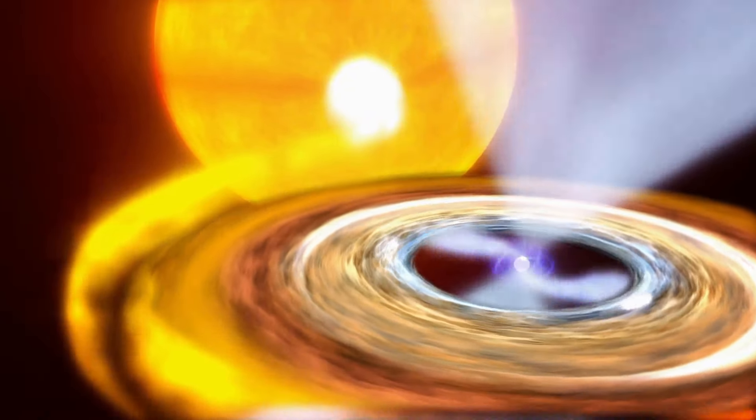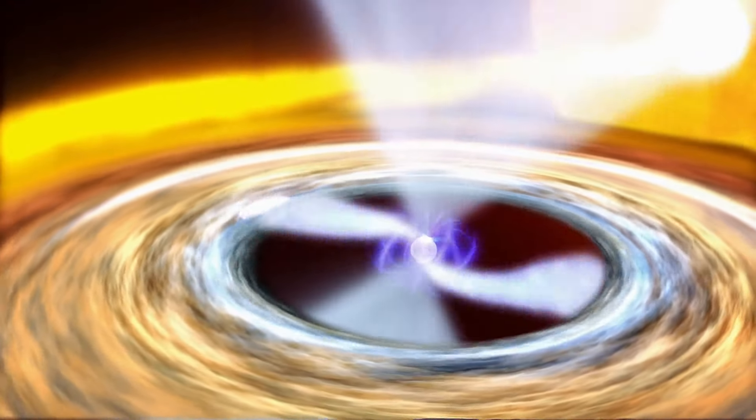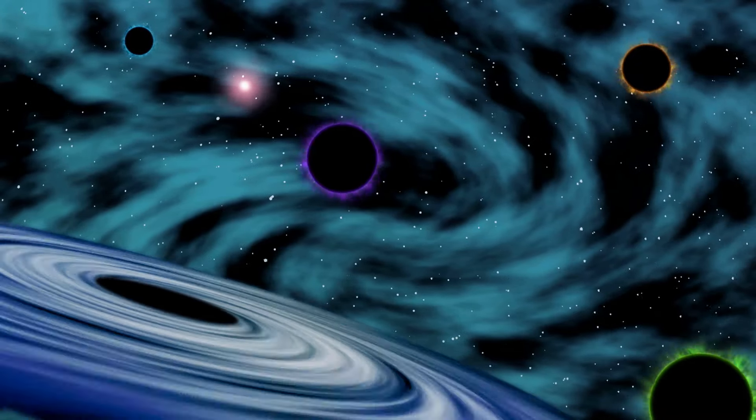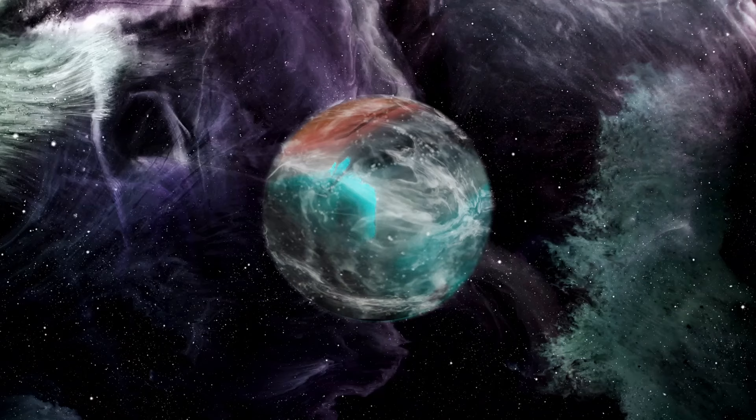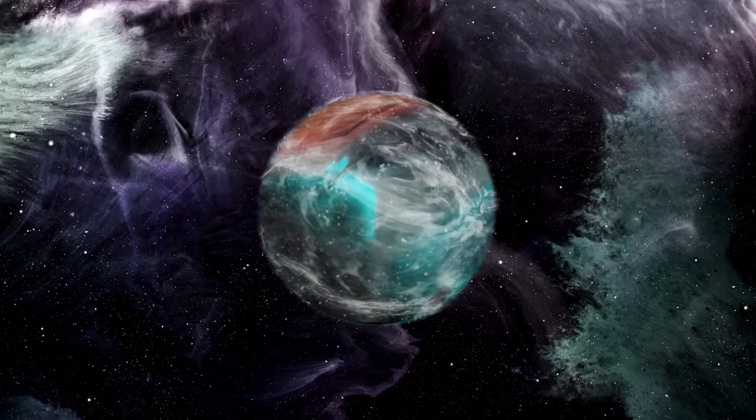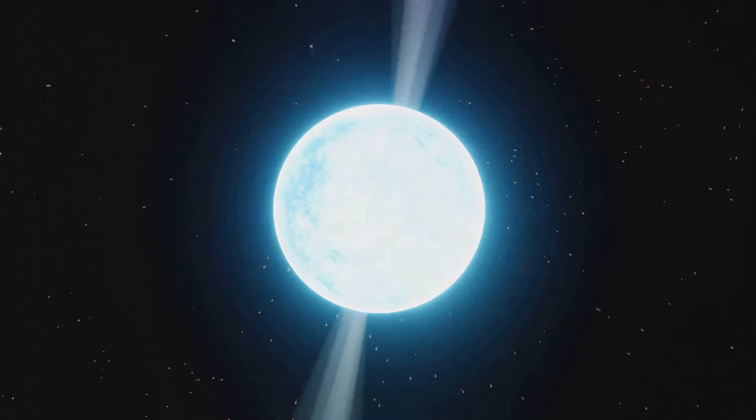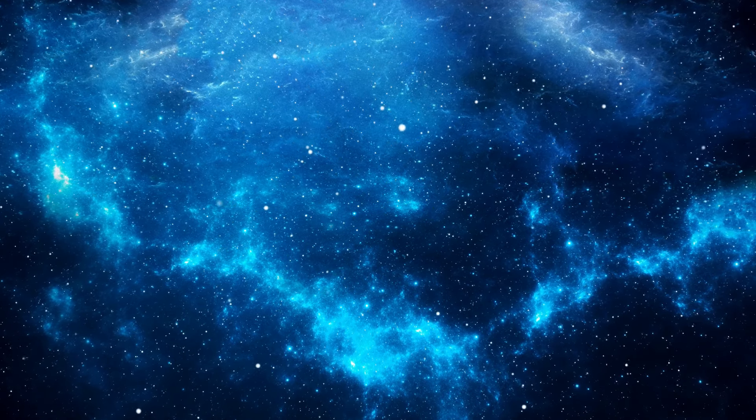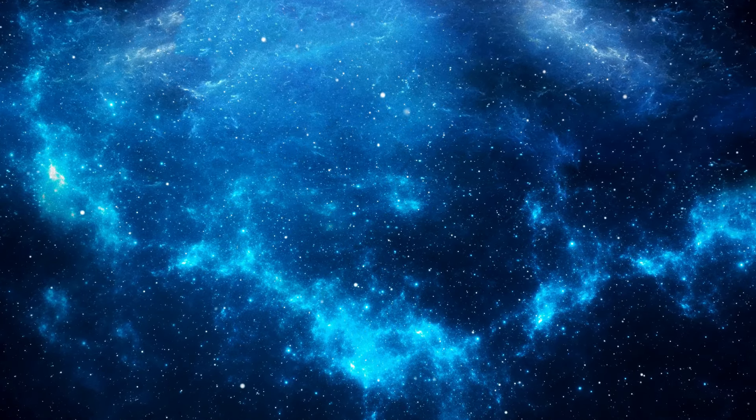These neutron stars are incredibly small for stellar objects, with diameters of about 20 kilometers or so. But don't let their size fool you. They are extraordinarily dense. Imagine a sugar cube worth of neutron star material. It would weigh as much as an entire mountain. That's because neutron stars pack their mass, up to twice that of our sun, into such a small space.